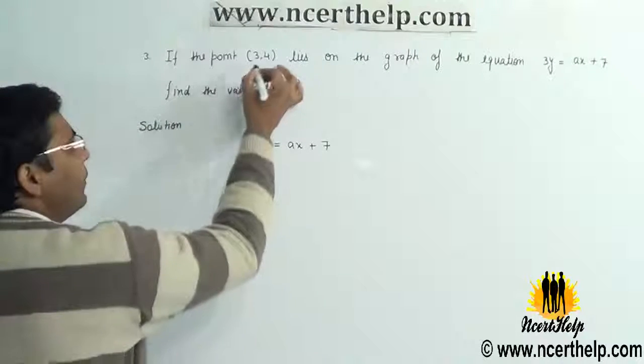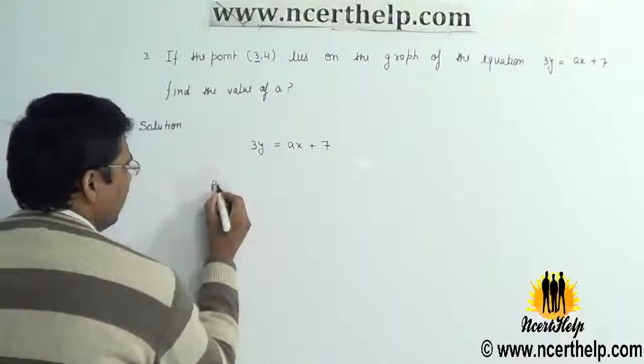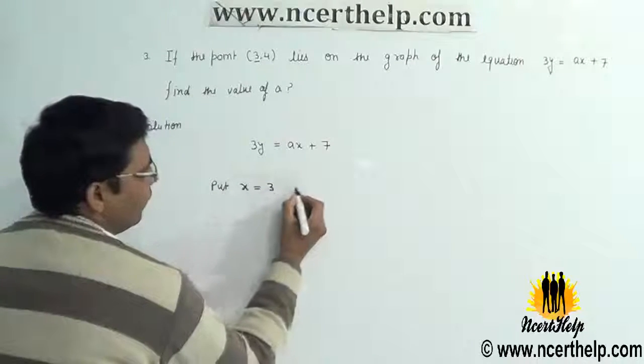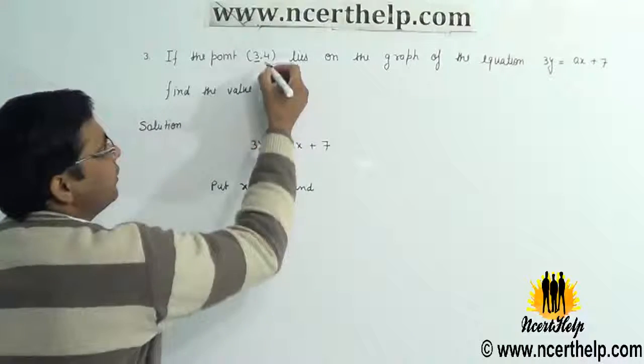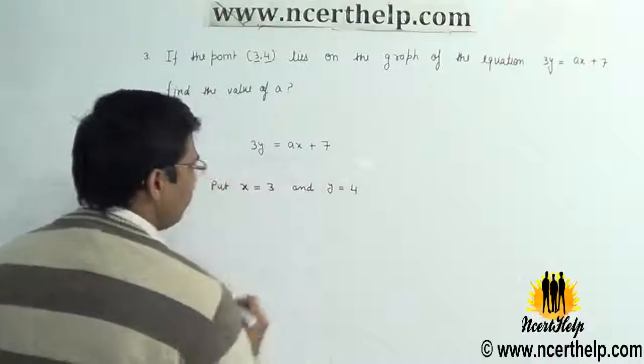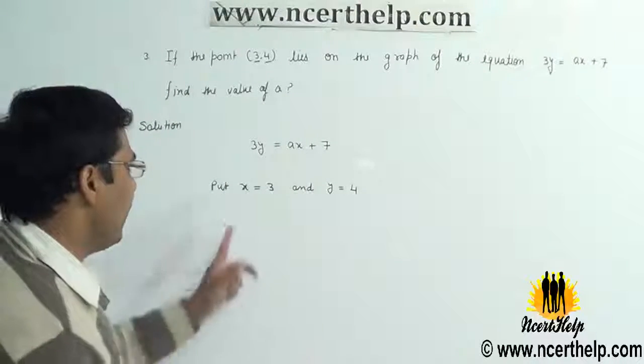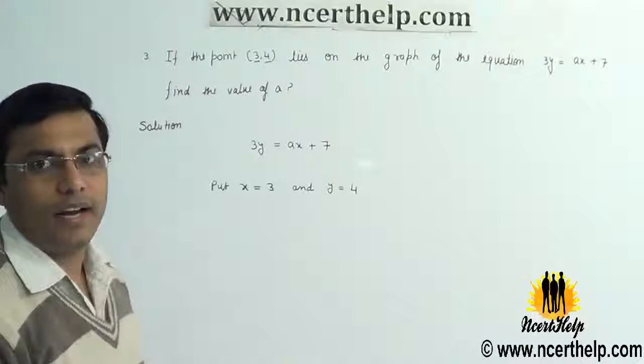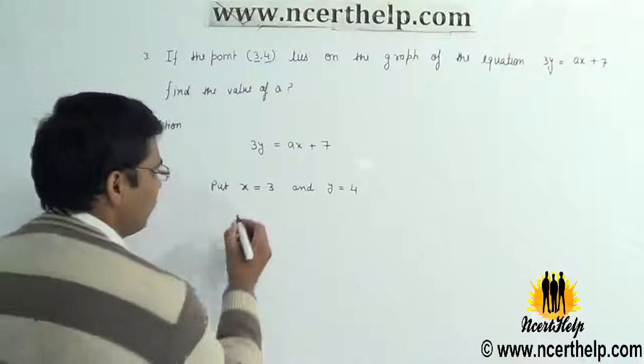Here, the first value is always for x and the second value is always for y. So we can put x = 3 and y = 4 in the given equation.